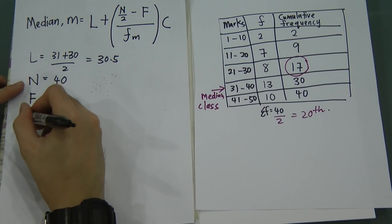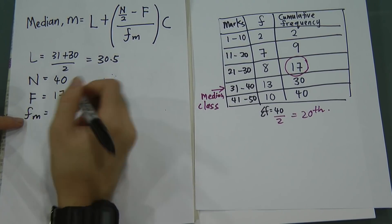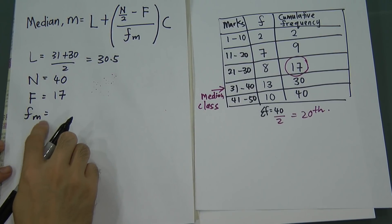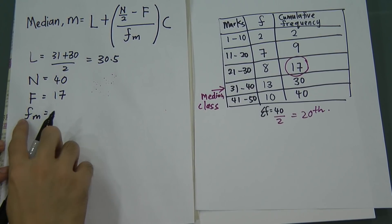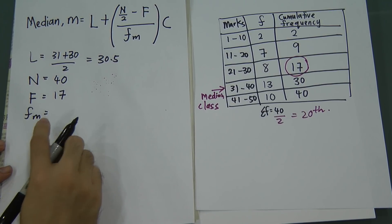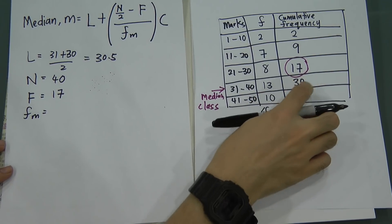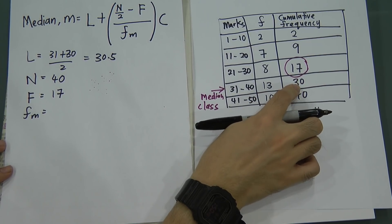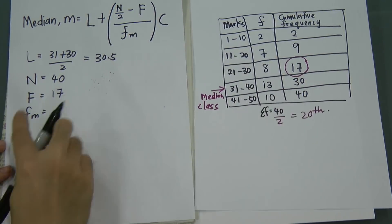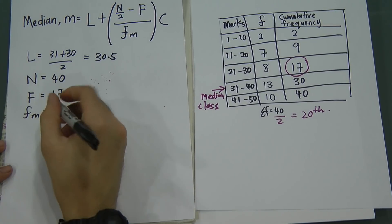What is Fm? The 'm' here stands for median, so it means the frequency for the median class. The frequency for the median class is 13. Be careful — some students will straight away take 30, but 30 is the cumulative frequency. The frequency for only the median class is 13.